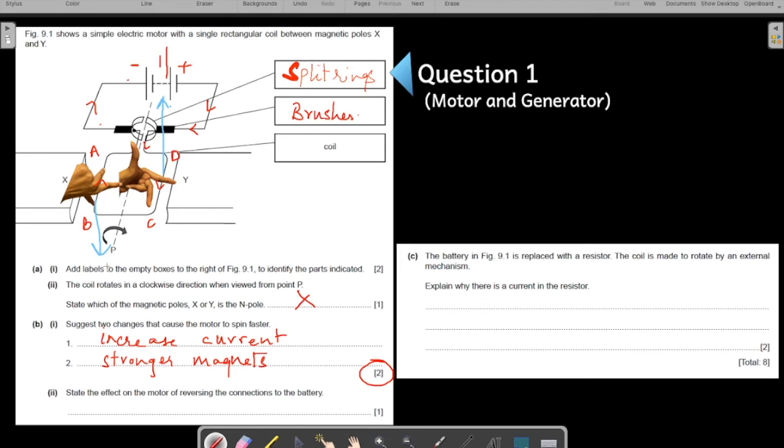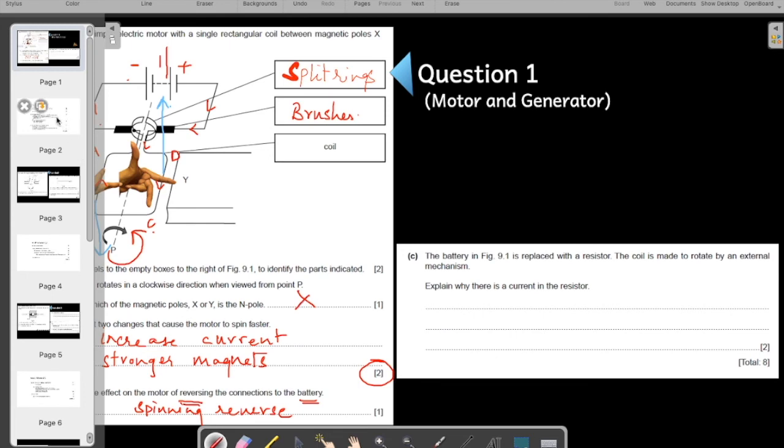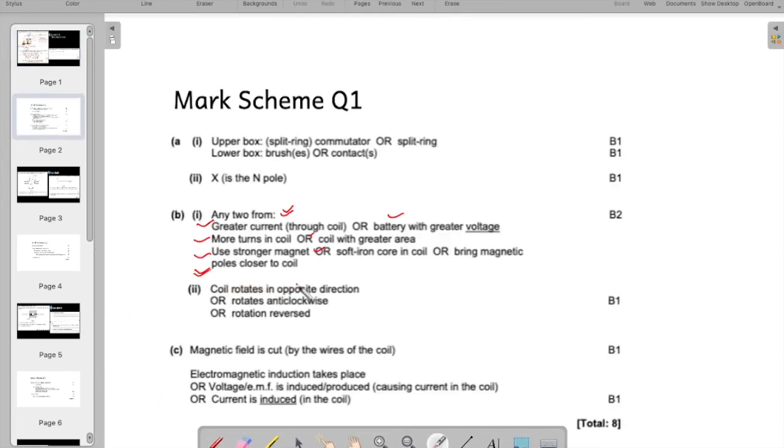Reversing the connection of the battery means you are reversing the current. You need not apply Fleming's left hand rule again and again. If you remember the fundamental of motors, which is very easy practically, whenever you reverse the current, the spinning also reverses. State effect: spinning or the turning will also reverse. Let us look at the answer as well. You can say the coil rotates in opposite direction, rotates anti-clockwise, or the rotation is reversed.